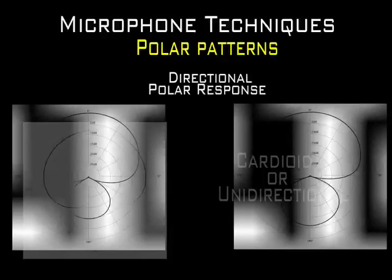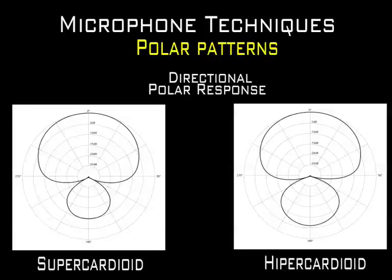The super cardioid or hyper cardioid type of microphone is used where side rejection is required while capturing some ambience through a small area of sensitivity directly off-axis. They exhibit phase reversal when sounds arrive at the rear lobe.